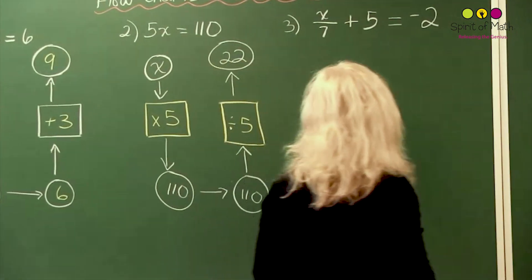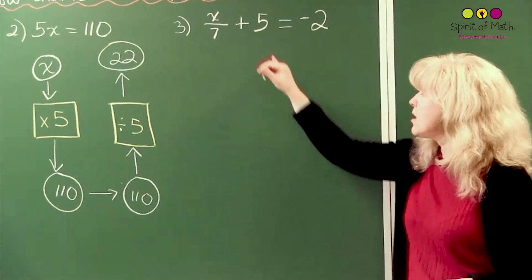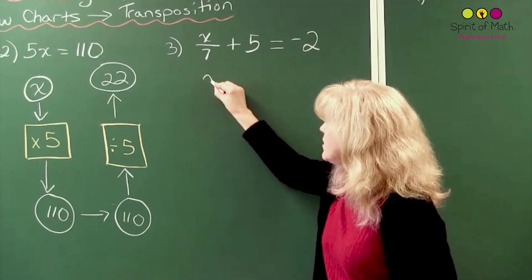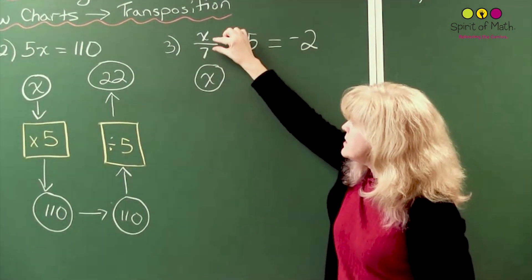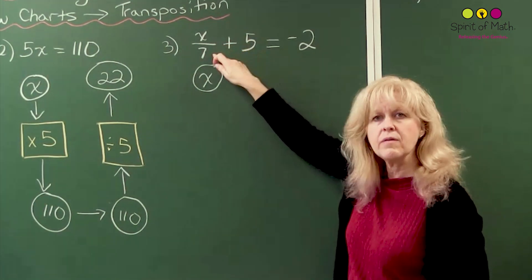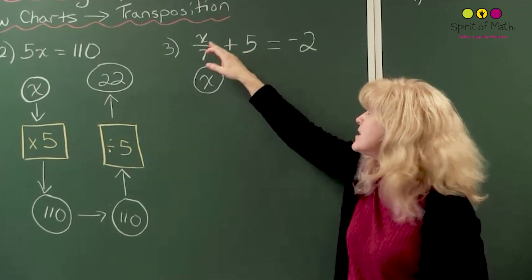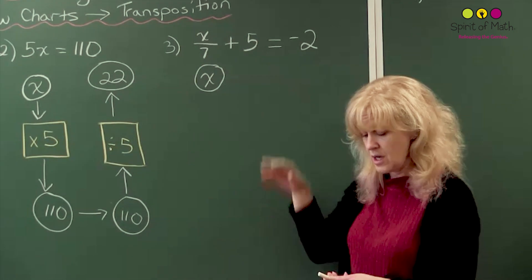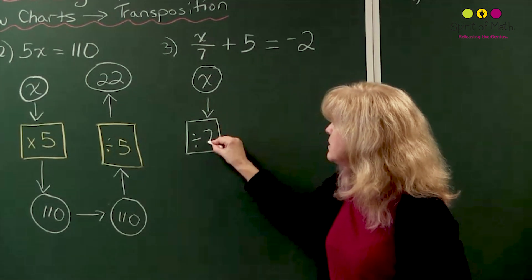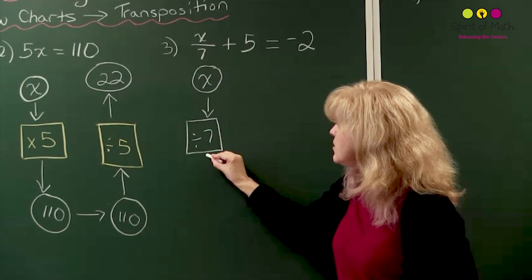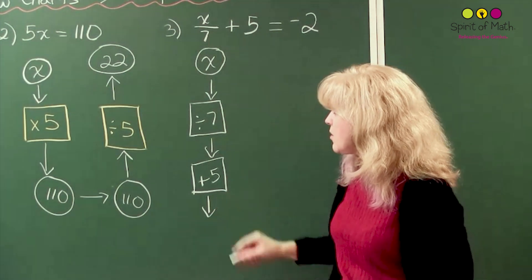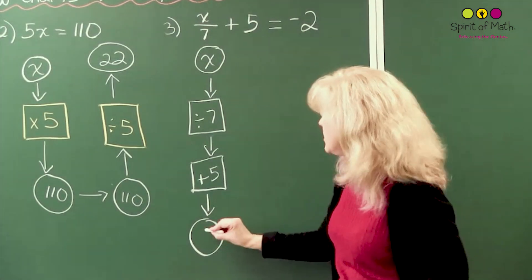Now let's go to this next one, which is a little bit more complicated — it's not just one operation sign attached to x. We're going to start, again, always with the x. Now, this 7 is much closer — it's glued onto that x. So you actually have to do divided by 7 before you can do the plus 5, by order of operations. So that's your first square: divided by 7. Then after you divide x by 7, you add 5 — another square, plus 5. And that equals, in a circle, negative 2.